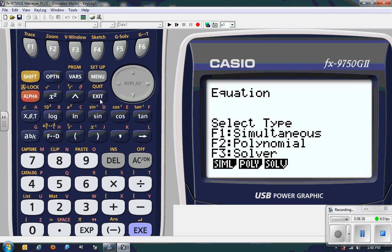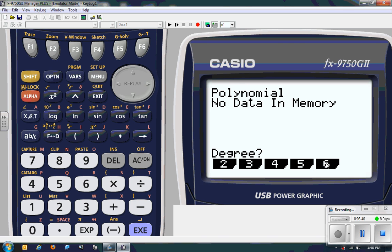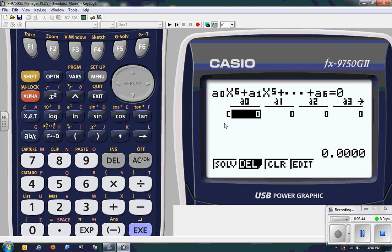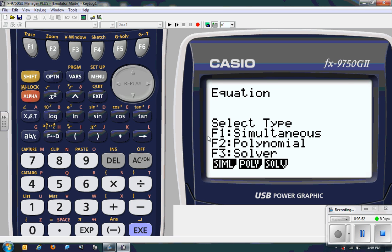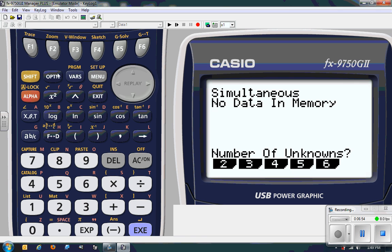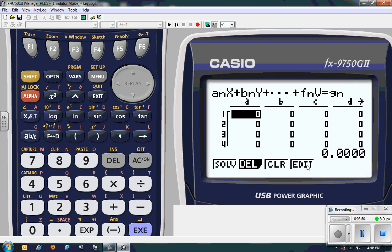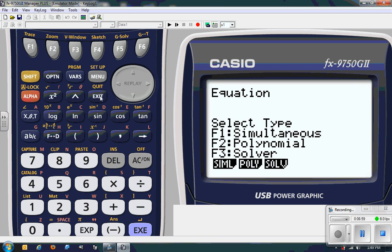It also has polynomial solver for higher order polynomials up to 6 degree. You just press which one you want. I want to go 6 degree. Fill in your equation with all the coefficients and then press solve and it'll find all the roots. Simultaneous. Again, you have systems of equations up to a 6 by 6. Very powerful piece of machinery.